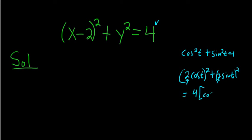And you can pull out the 4, and you get cosine squared t plus sine squared t. And that's 1, so you get 4 times 1, which is 4, which is what we have on the right-hand side up here.